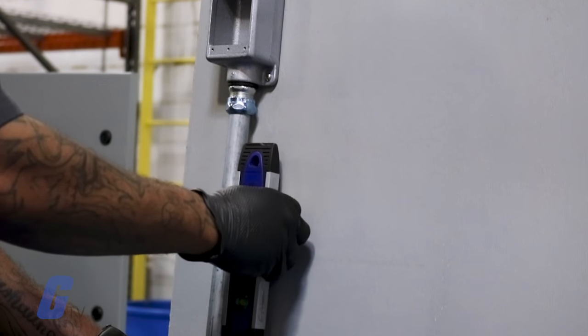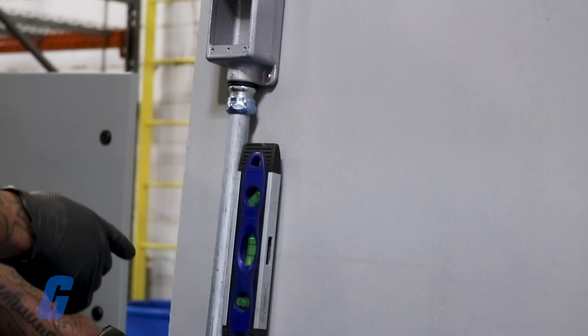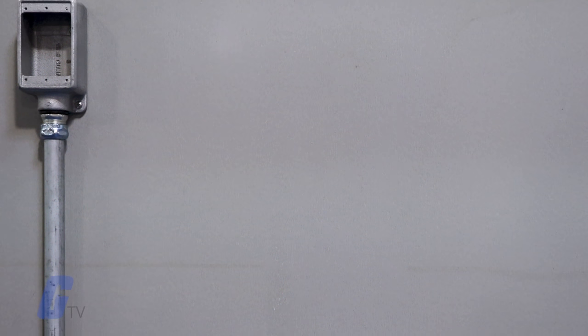You can hold it up to the wall, use a level held firmly against the front side of the pipe, or hold it to a surface that you know is level horizontally and vertically.